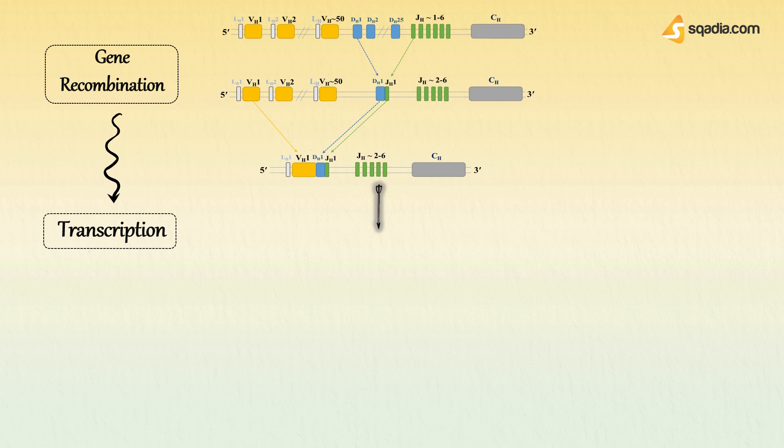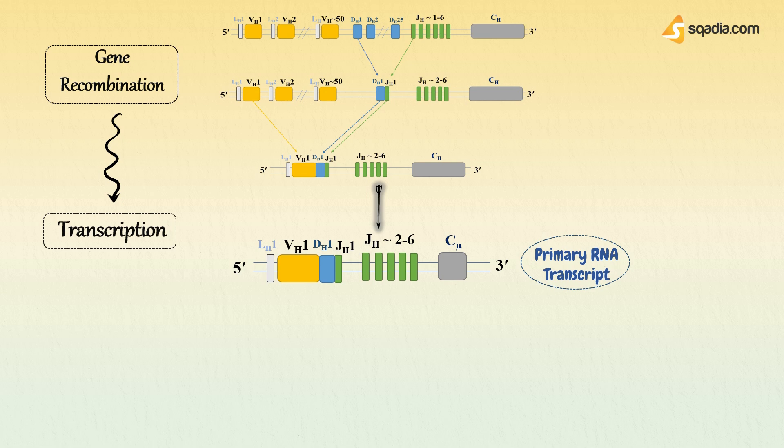From this step, the process of transcription starts, forming a primary RNA transcript. This primary RNA is made of both exons and introns that are the coding and non-coding regions of DNA, respectively. Here in this example, this primary RNA transcript comprises V1D1J1 region or complete V region exon, remaining J segments, and constant region that is C mu for IgM.